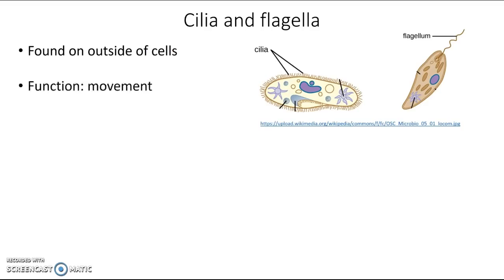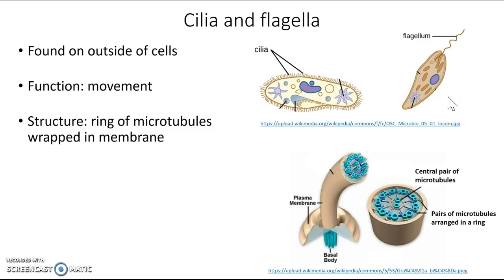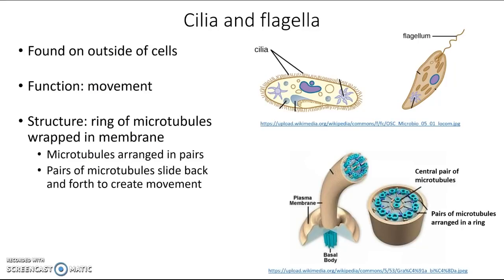For both cilia and flagella, their function is movement, and they share the same basic structure, which is a ring of microtubules wrapped in membrane. In this diagram, the greenish things are the microtubules arranged in a ring, wrapped in a layer of membrane. Those microtubules are arranged in pairs as you go around the ring, and movement occurs as the pairs of microtubules slide back and forth next to each other.